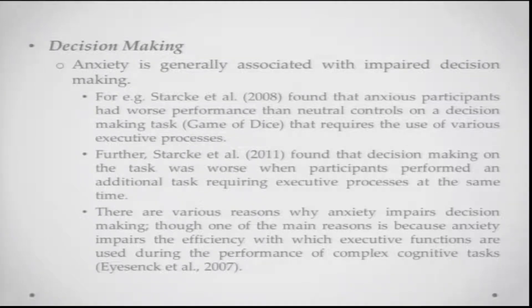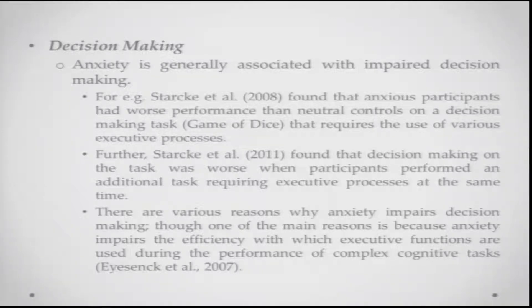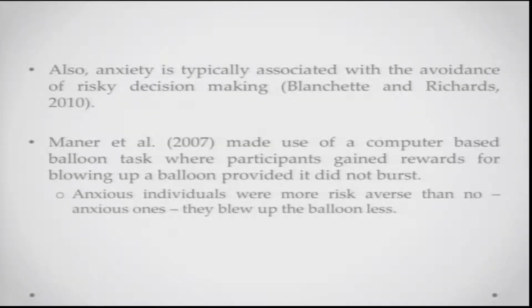They continued this study in 2011 and found that decision making on the task was worse when participants also performed an additional task that was more taxing on executive processes. It seems that anxiety is linked to executive processes. One of the main reasons anxiety could impair decision making is that it impairs the efficiency with which executive functions are used during the performance of complex cognitive tasks. Anxious people will probably be slightly worse at making particular kinds of complex decisions.